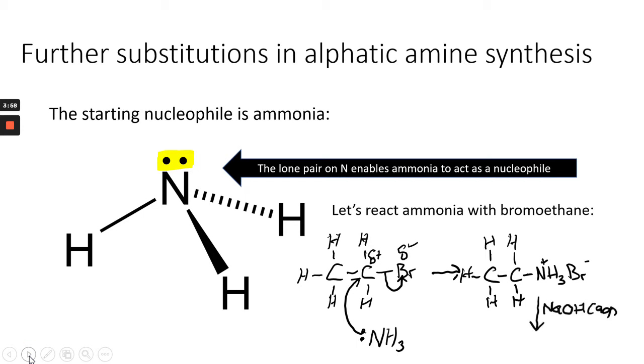To get rid of the bromide, we need to react the salt with sodium hydroxide. The sodium hydroxide removes one of the protons in the NH3 plus, and you get the amine left behind.